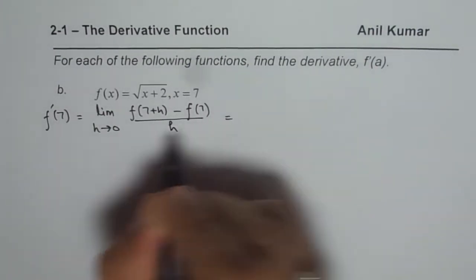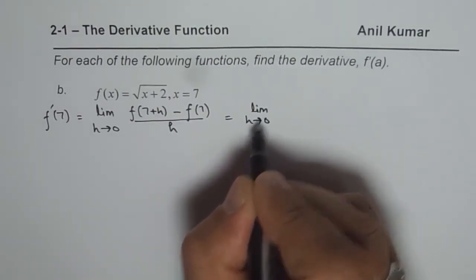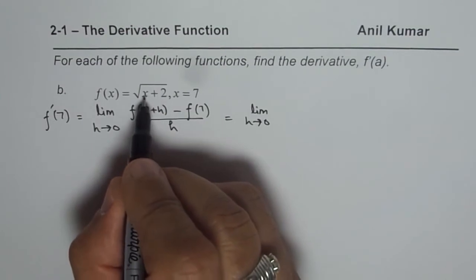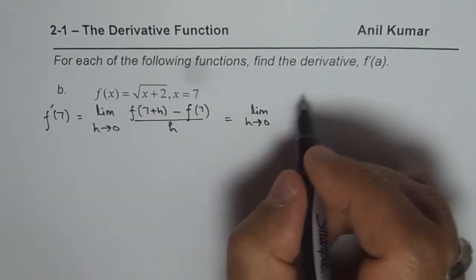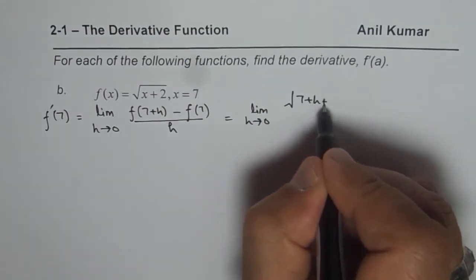Now that means it is limit h approaches 0. 7 plus h means I will replace x with 7 plus h. So we get square root of 7 plus h plus 2, right?